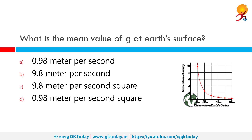What is the mean value of G at earth's surface? Whenever a body is falling under the influence of the earth's gravitational force, it will fall with an acceleration of 9.8 m per second. So the correct answer is 9.8 m per second square.